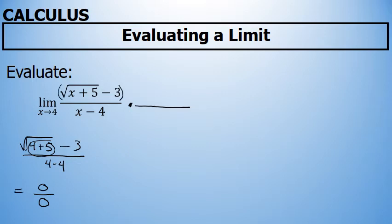I'm going to multiply the numerator and denominator by the conjugate of the square root of x plus 5 minus 3, which is the square root of x plus 5 plus 3. I will be multiplying the numerator and denominator by this conjugate, in effect multiplying the limit by 1, not changing its value.